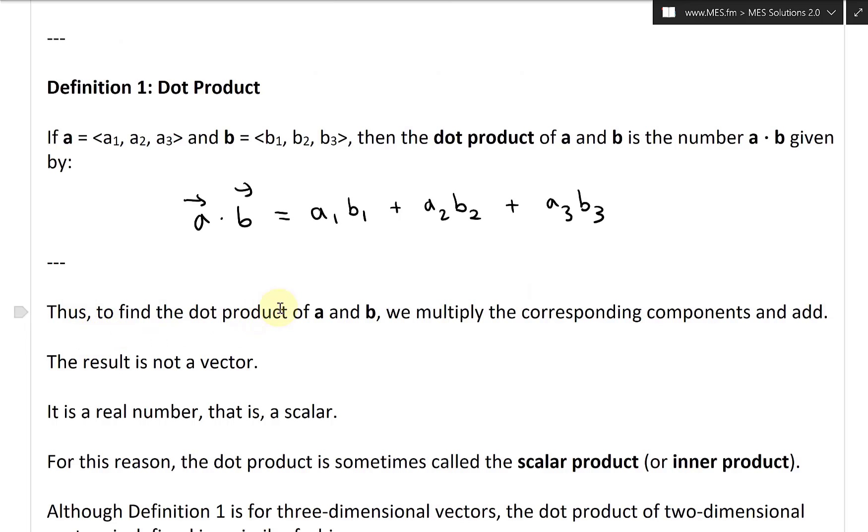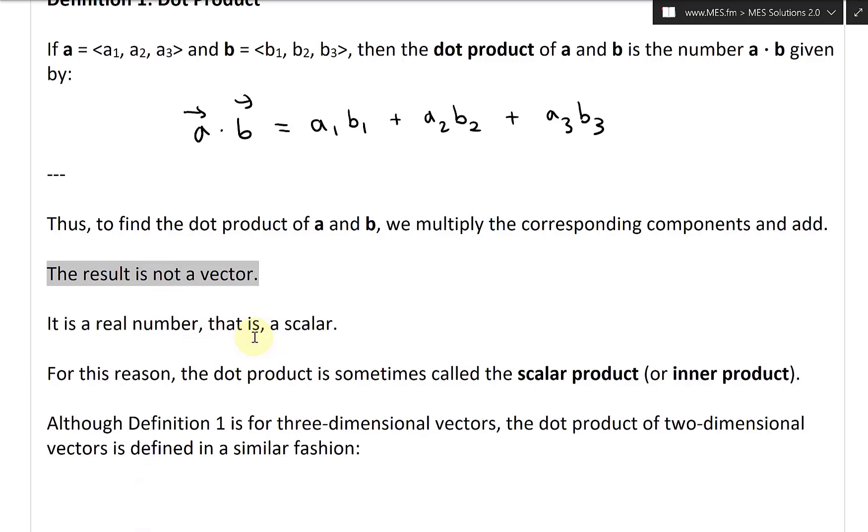So thus, to find the dot product of a and b, we multiply the corresponding components and then we add them all together. And again, as stated earlier, the result is not a vector. It is a real number, that is a scalar. For this reason, the dot product is sometimes called the scalar product or inner product.